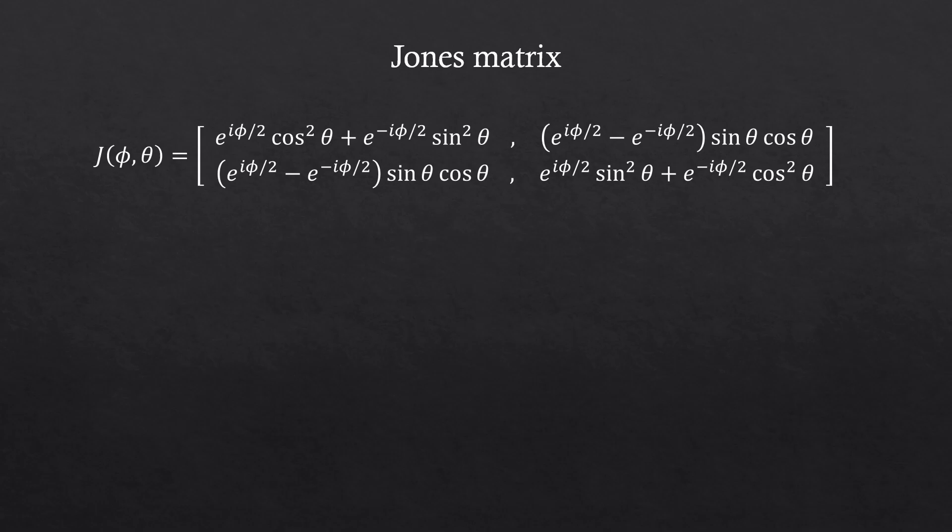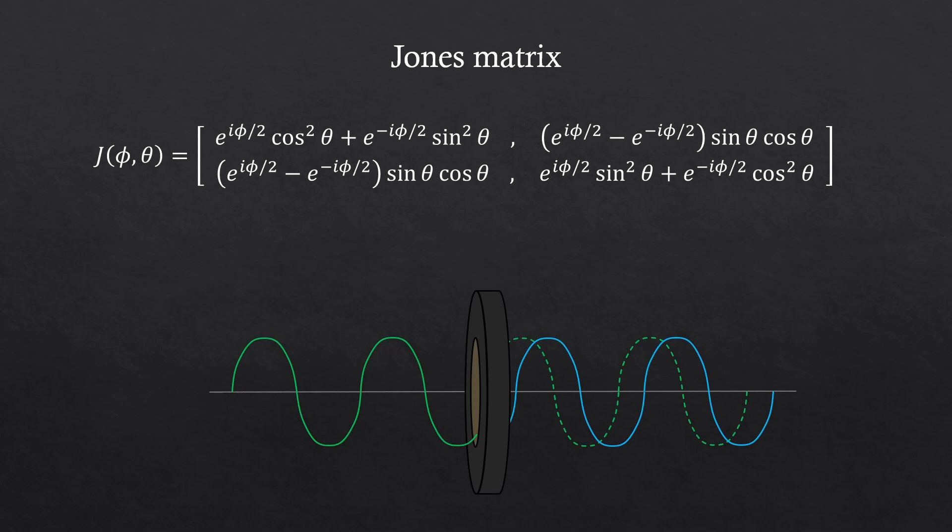Here's the expression. So if we have a wave going through the waveplate, the amount of wave shift is the phi, right there. And if you start rotating the waveplate, you can also change the matrix by this rotation angle theta.